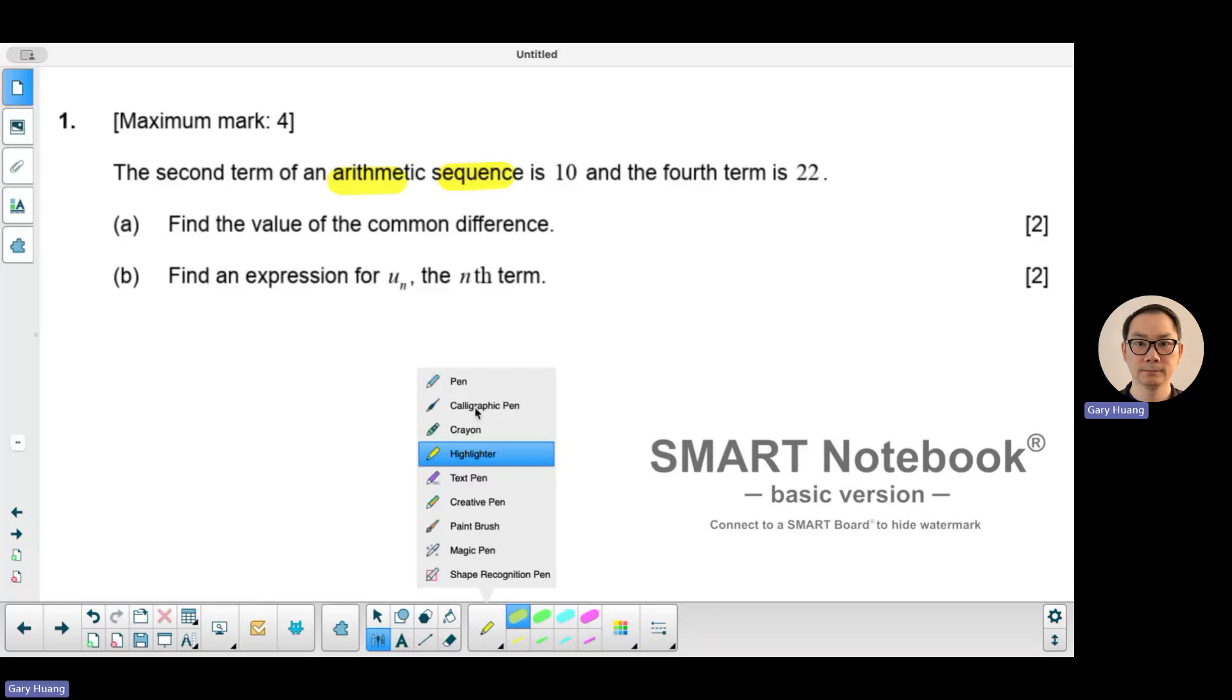In this particular question, you're given two terms. You're given the second term, so U2 is 10, and you're given the fourth term, so U4 is 22.